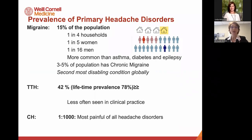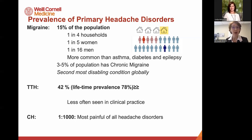Primary headache disorders are extremely common. Migraine affects 15% of the population — 20% of women and about 6% of the male population. It's more common than diabetes, asthma, and epilepsy combined, and it's considered the second most disabling condition globally in years lost to disability — first among women under 50, according to the World Health Organization. About 5% of the population has chronic migraine, which is the term we reserve for people having 15 headache days per month or more, of which at least eight days are migraine.